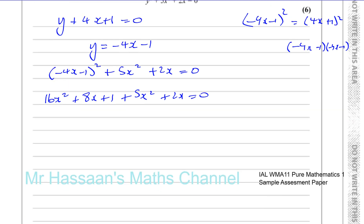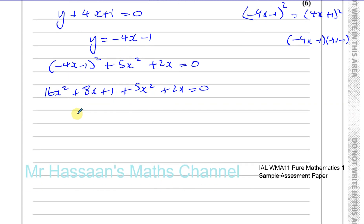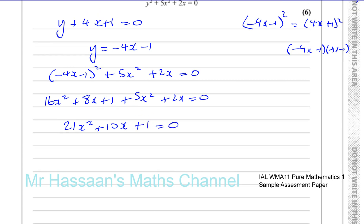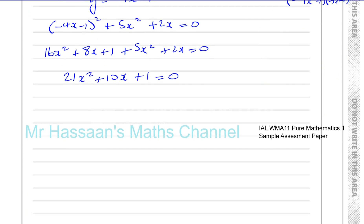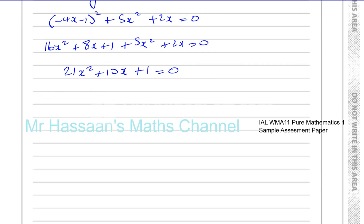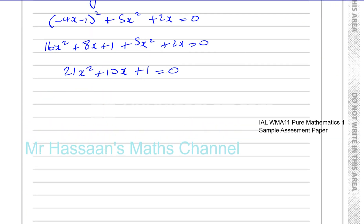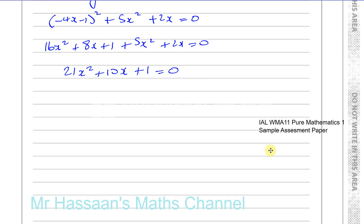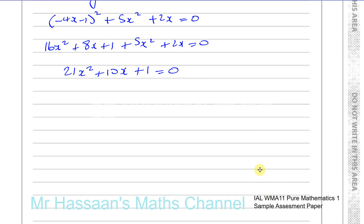Combining like terms: 16x squared plus 5x squared is 21x squared, 8x plus 2x is 10x, plus 1, equals 0. Since the question says 'solve' rather than 'give exact form', I'm assuming we can factorize this quadratic.